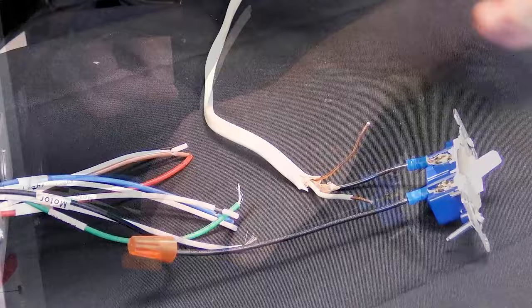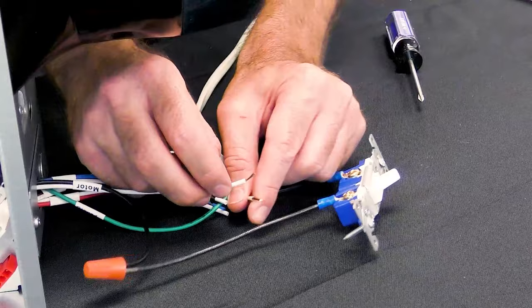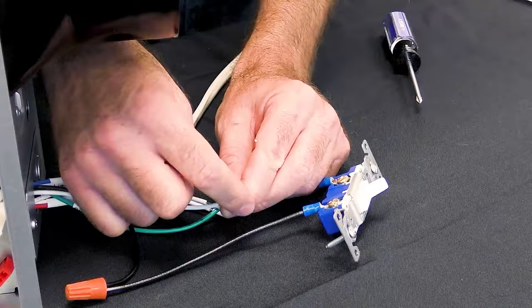You will be left with the white neutral wires and green ground wires. Take the two neutral wires and wire nut them together.